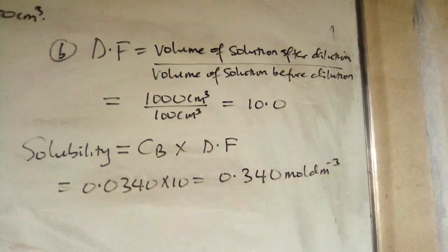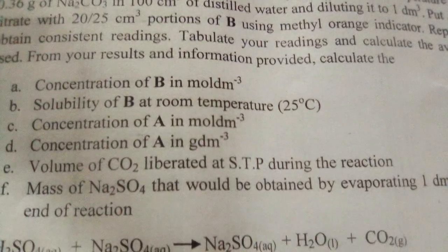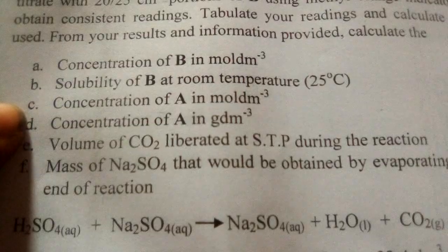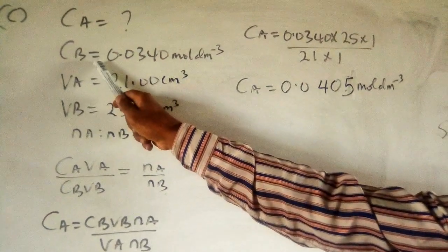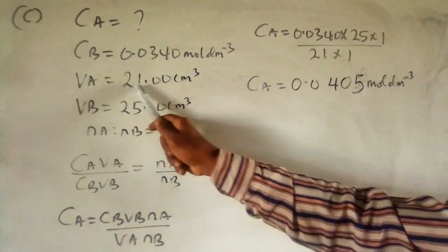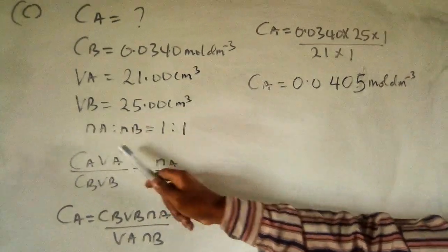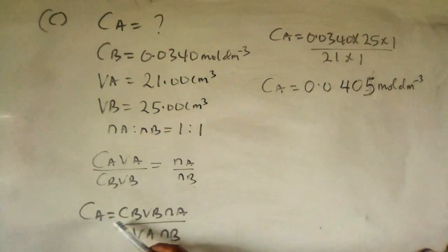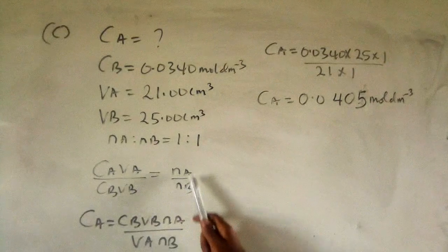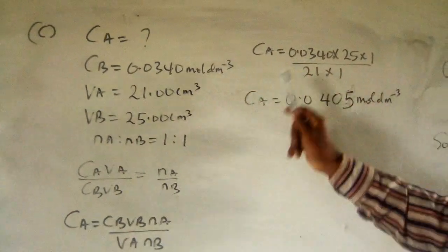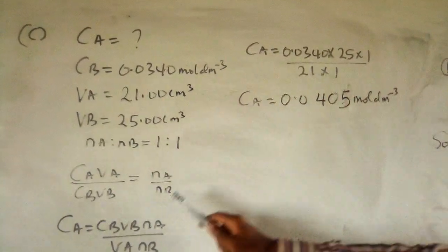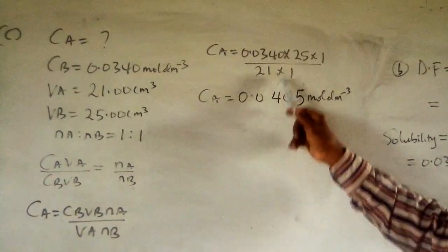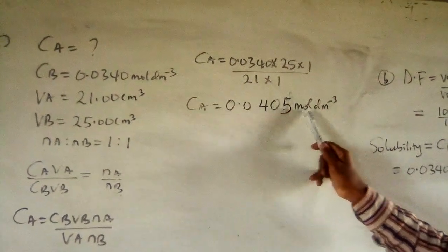Part C asks for the concentration of A in mol/dm³. CA is unknown; CB = 0.0340, VA = 21 cm³, VB = 25 cm³, mole ratio NA:NB = 1:1. Making CA the subject: CA = (CB × VB × NA) / (VA × NB) = (0.0340 × 25 × 1) / (21 × 1) = 0.0405 mol/dm³.